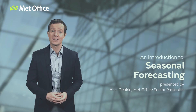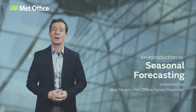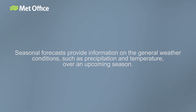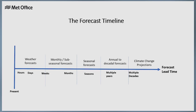Hello and welcome along to this introduction video, part of a series of films about seasonal weather forecasting. Seasonal forecasts provide information on the general weather patterns, typically rainfall and temperature, over an upcoming season. On the forecast timeline, they sit after short-term weather and monthly forecasts and before annual, decadal and long-term climate projections.